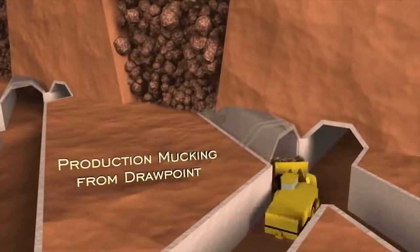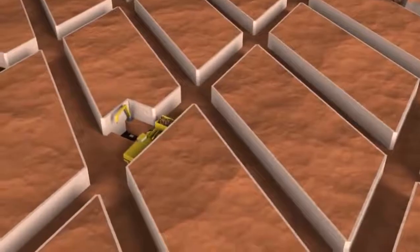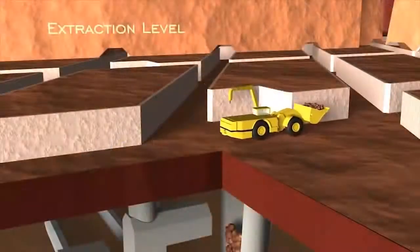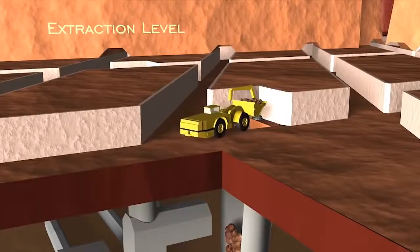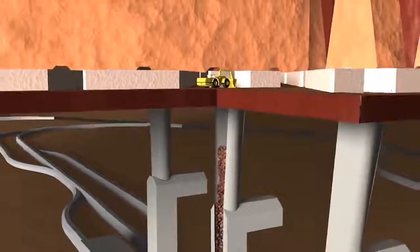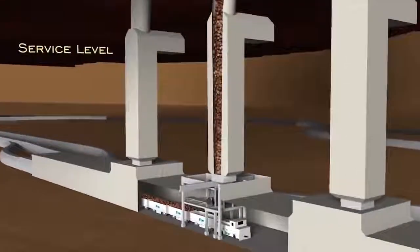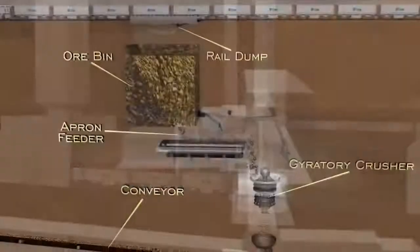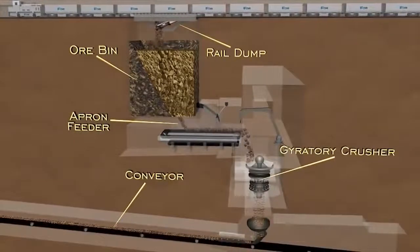The resulting ore is pulled from the draw points. Ore is transported to the Grizzly and Ore Pass to feed a series of train cars. The train cars will deliver the ore to a crusher and series of conveyors for delivery to the mill.